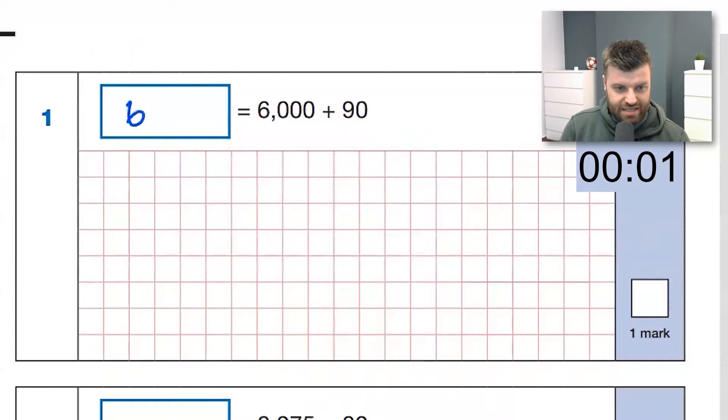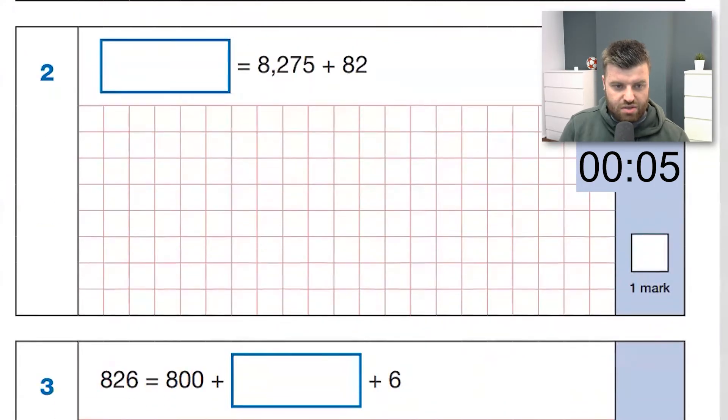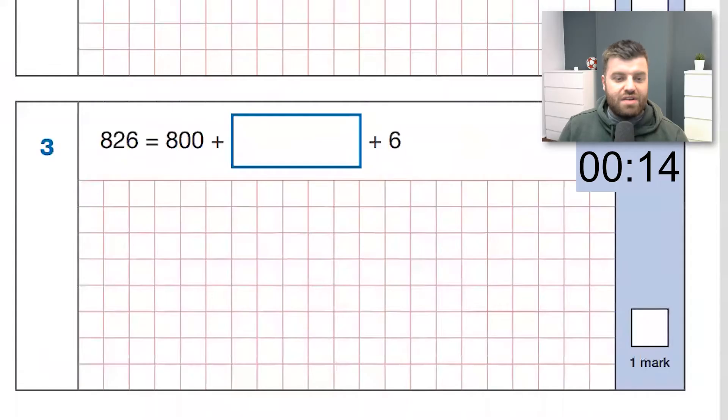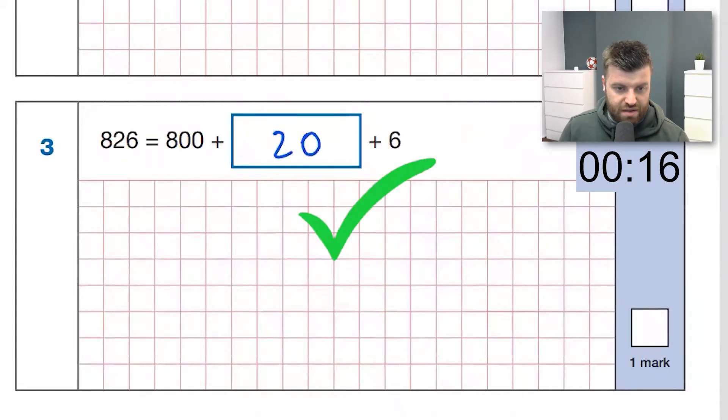Question one, 6,000 plus 90, easy, 6,090. Question two, scroll down, 8,000 to 275, 8,300, and we're going to take off that, 57. Next one, did that in my head. I am the one. 826, we're missing the 20. That's a place value question.